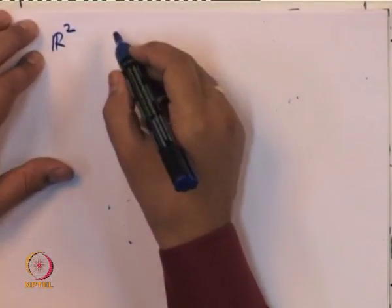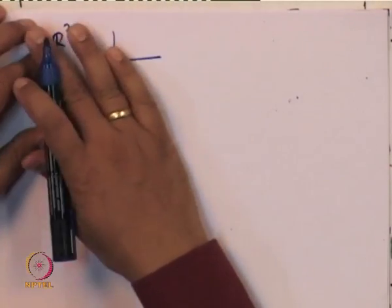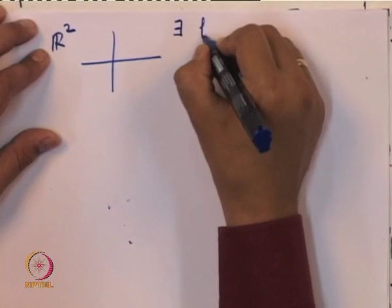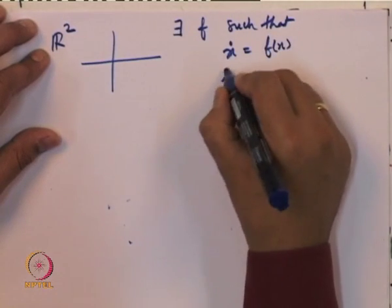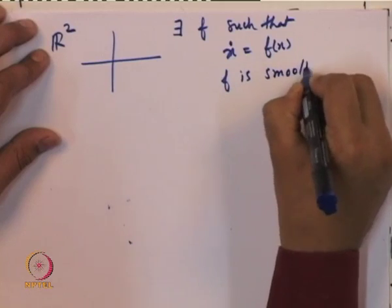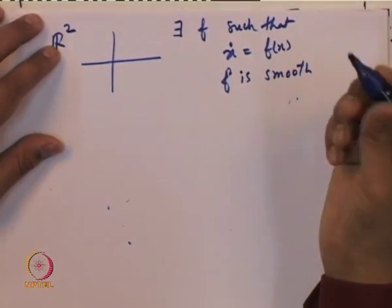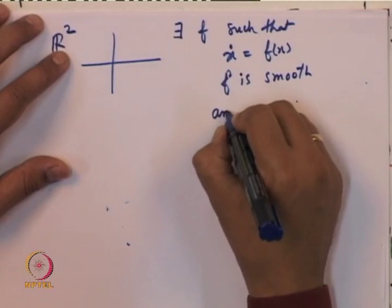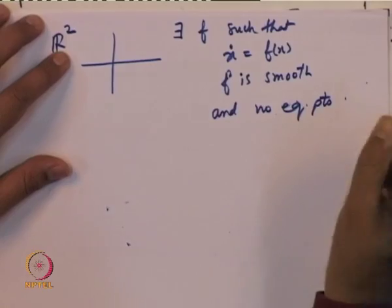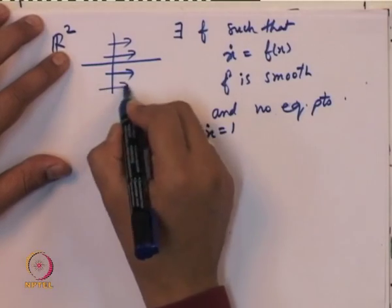Take R²: if someone asks whether we can draw a smooth vector field with no equilibrium points at all, the answer is yes. One can simply set ẋ = 1, so that no point is an equilibrium point.